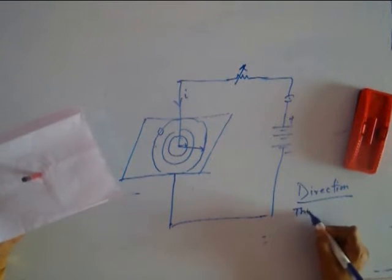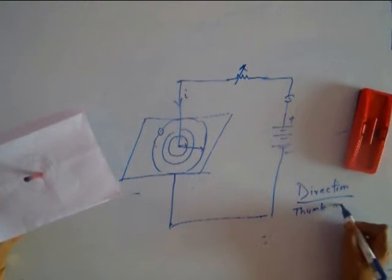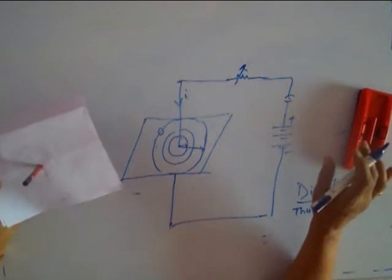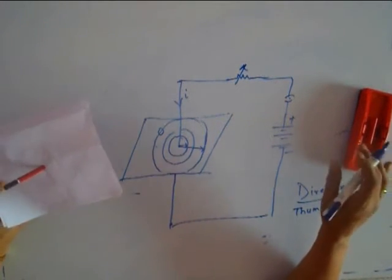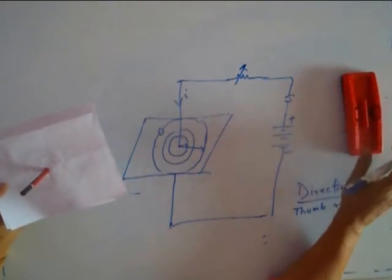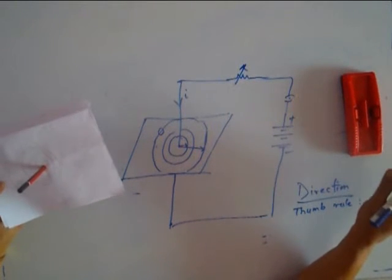A thumb rule means an easy method to obtain a particular result. We do not go into the science of it, but because it is convenient and always correct, we follow the thumb rule.